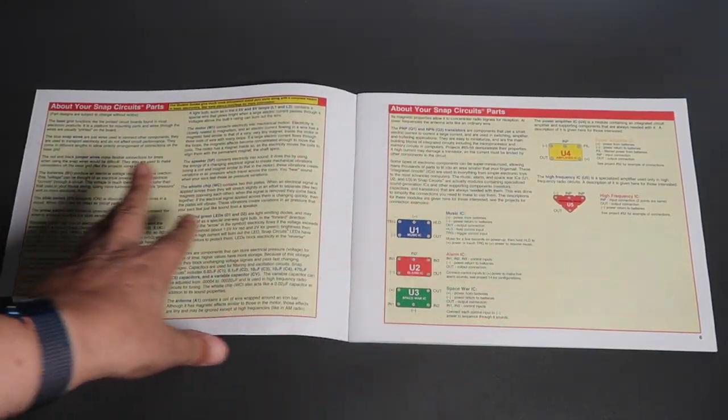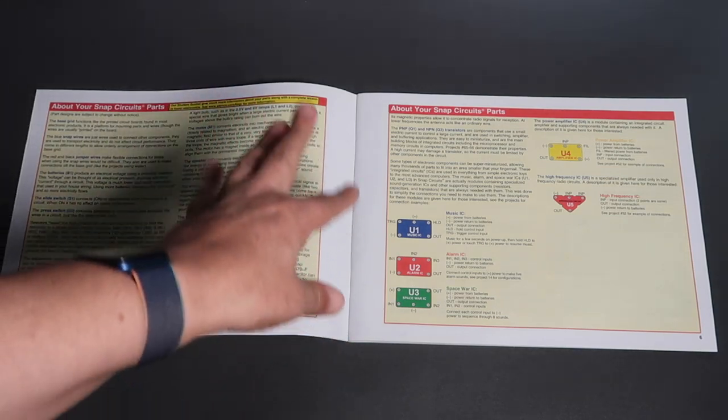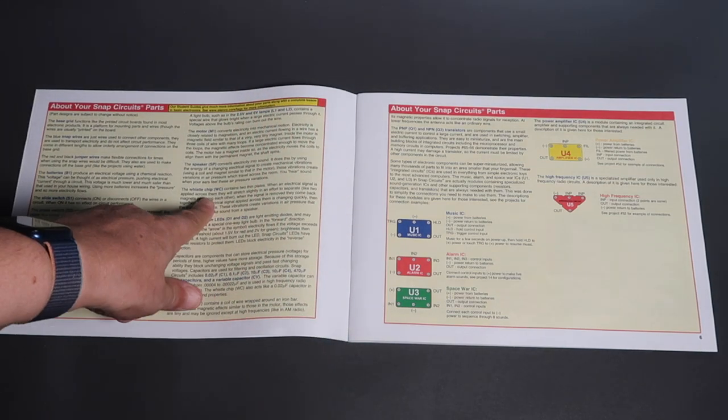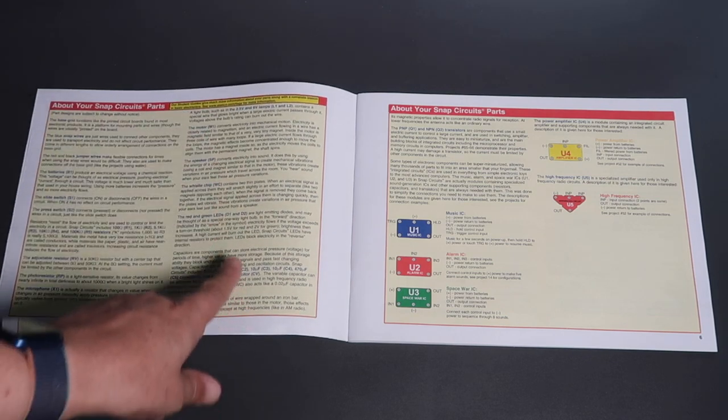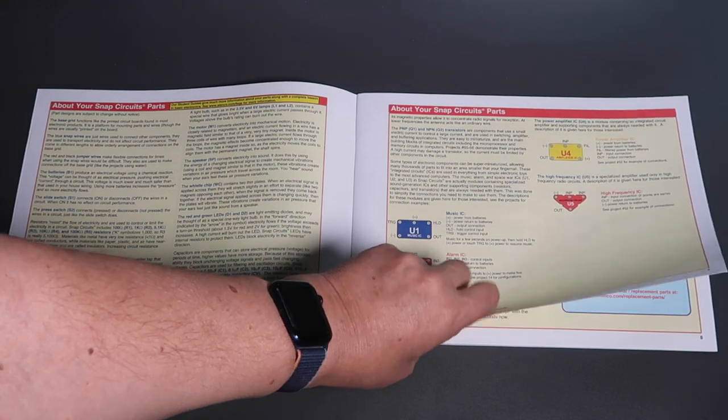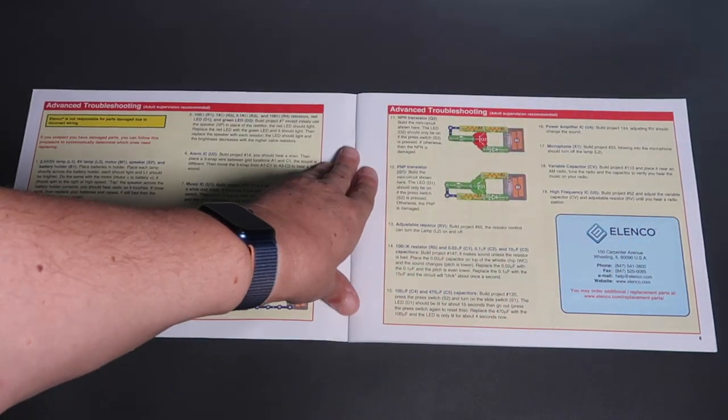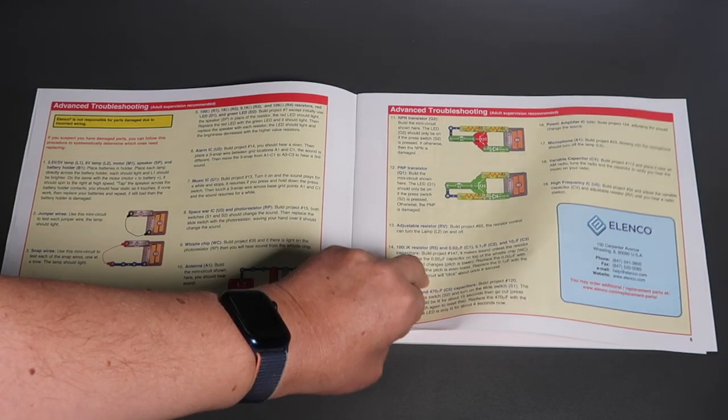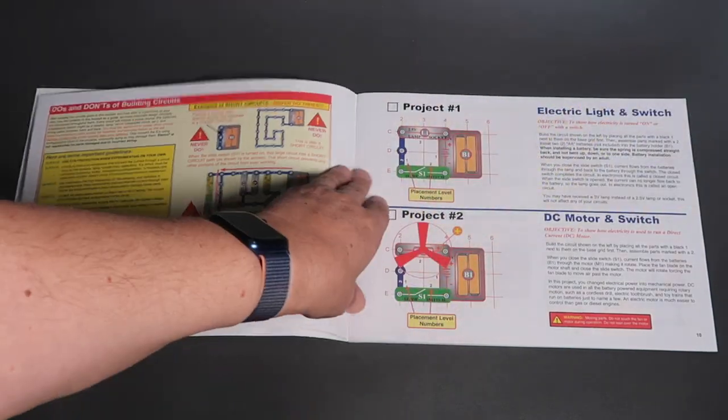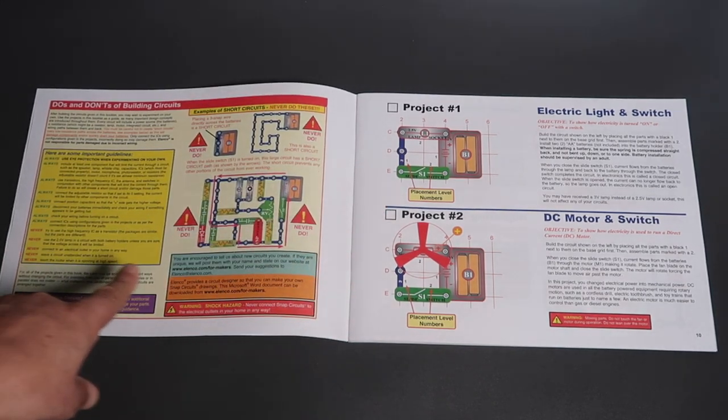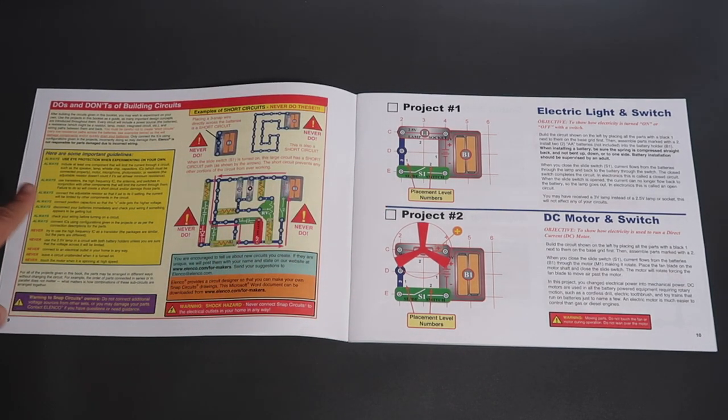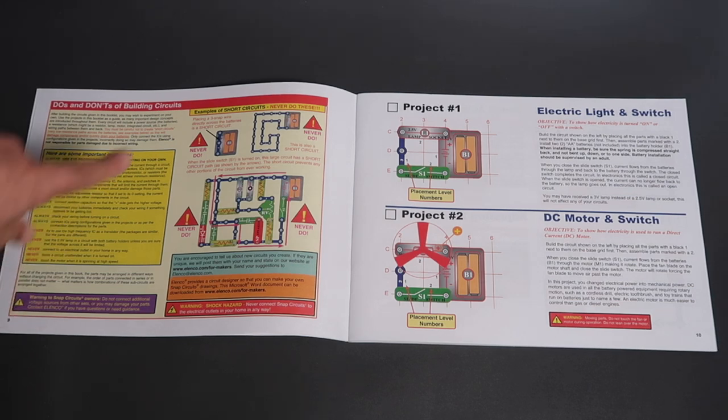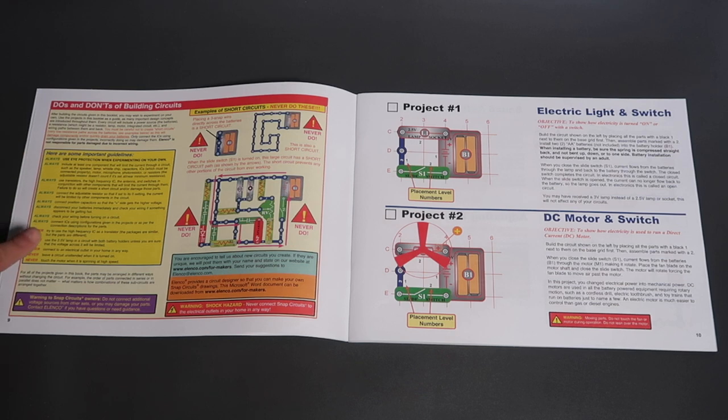There's a whole section here about different information about certain of the chips. Like the whistle chip, the speaker, the motor, the LEDs. There's a whole guide to troubleshooting. It's always do these things, never do these things. Very well done manual.